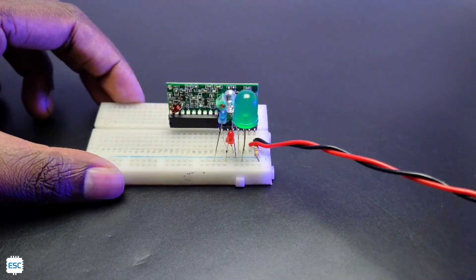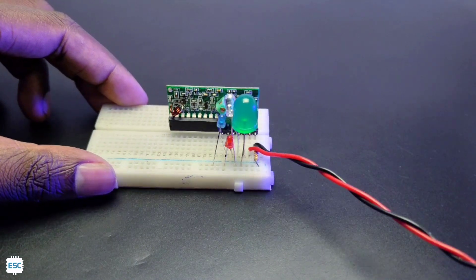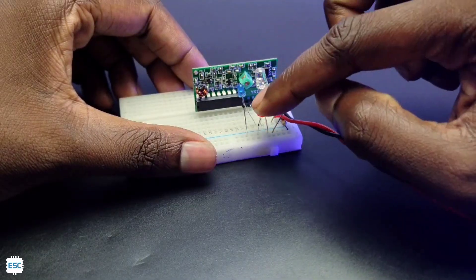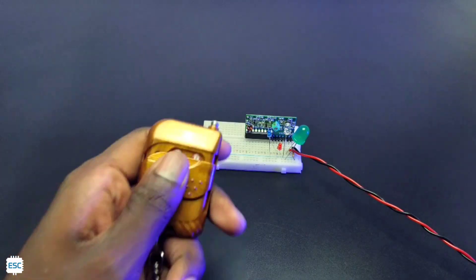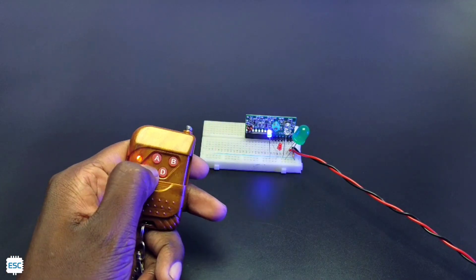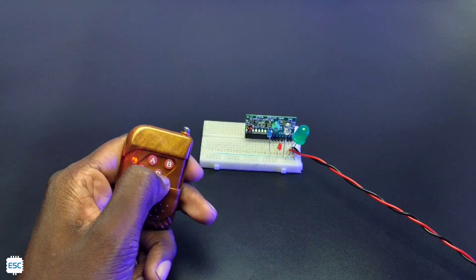That's all about connections. Now let's test the circuit. As you can see here, when I press the button on the remote, you can see the corresponding LED blinks on the receiver section.